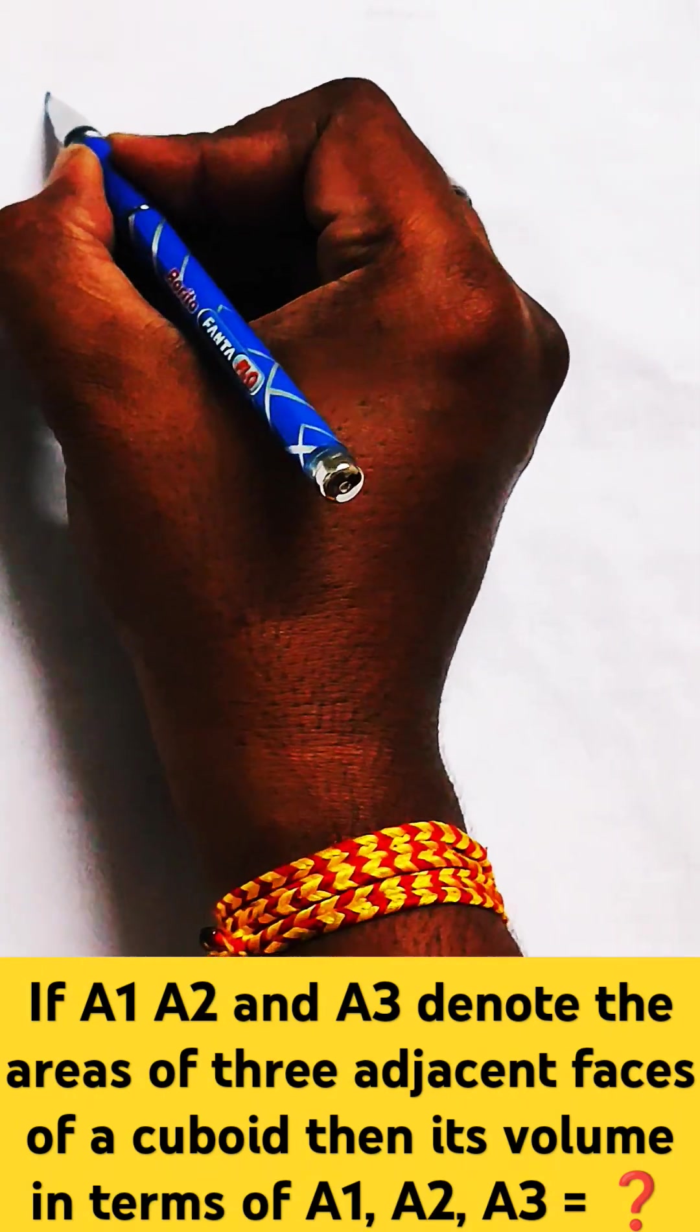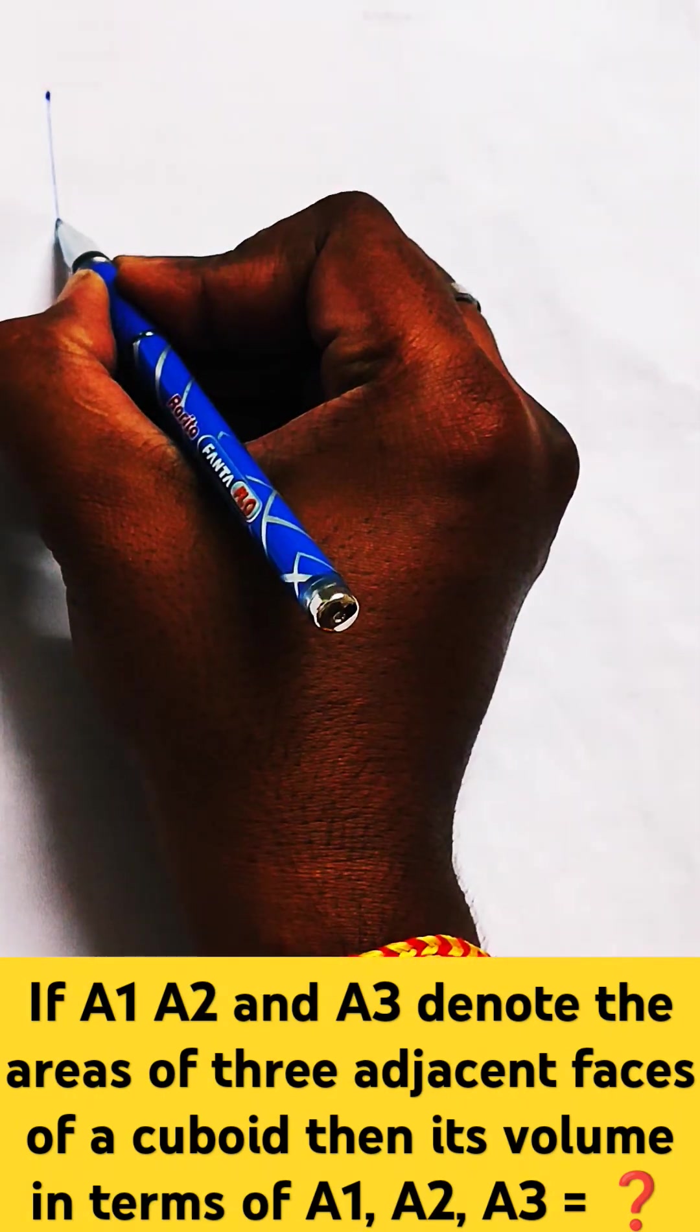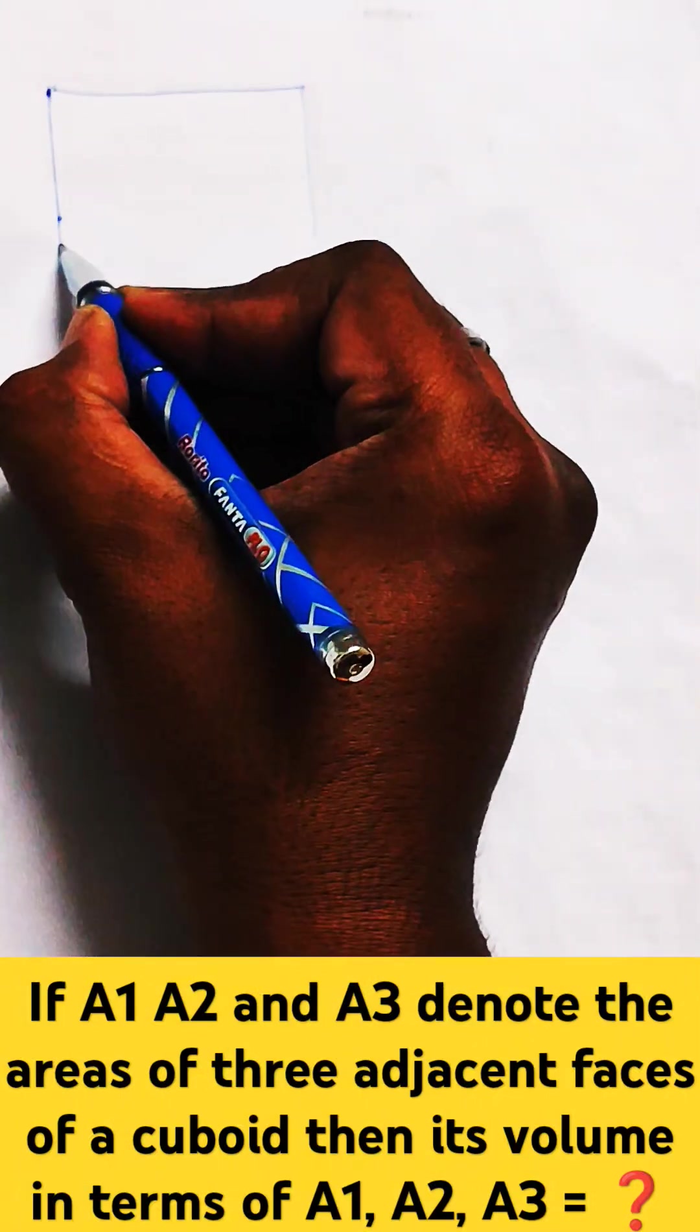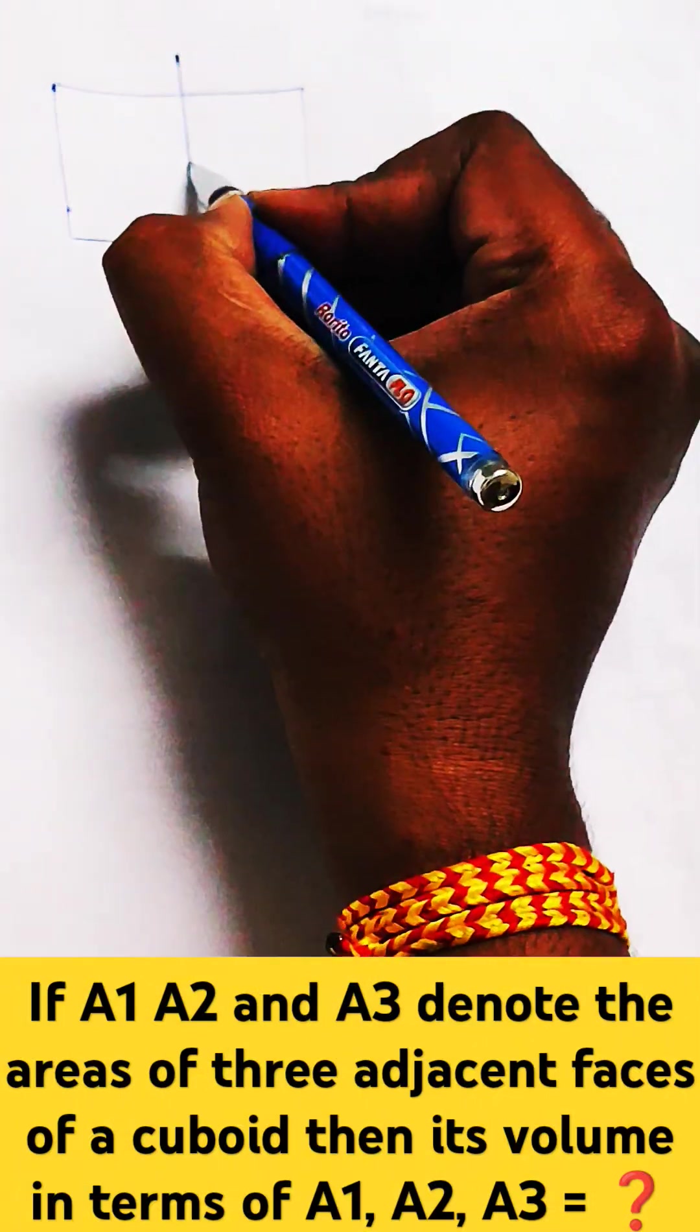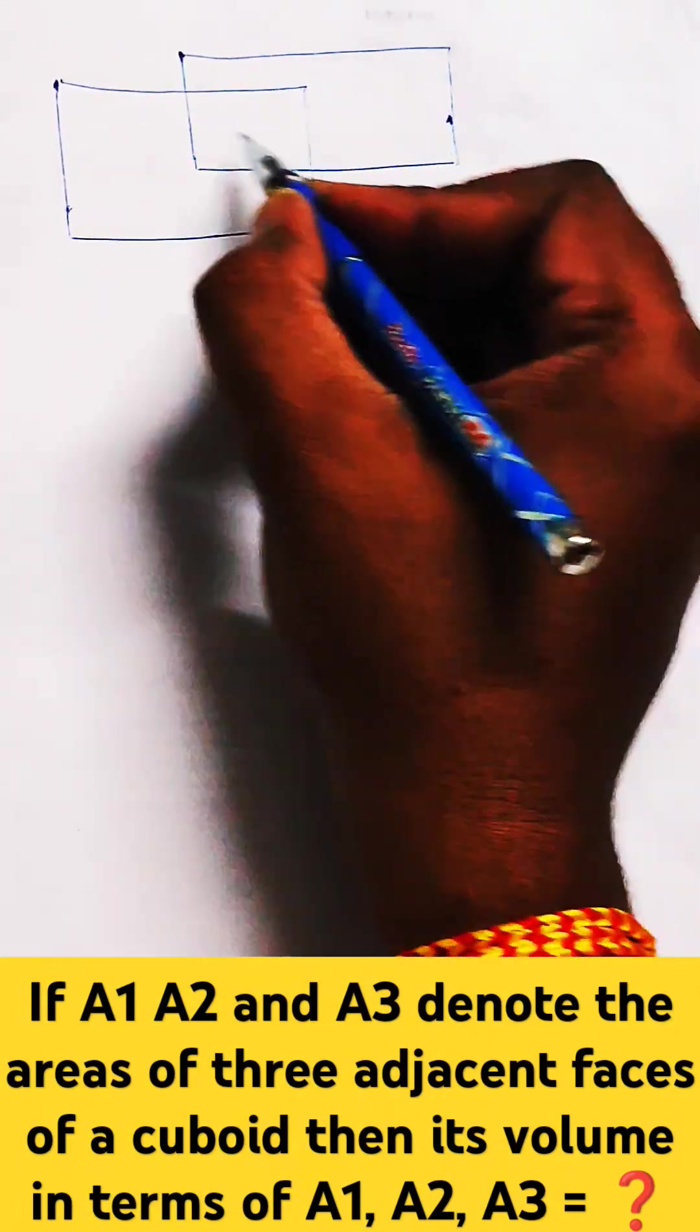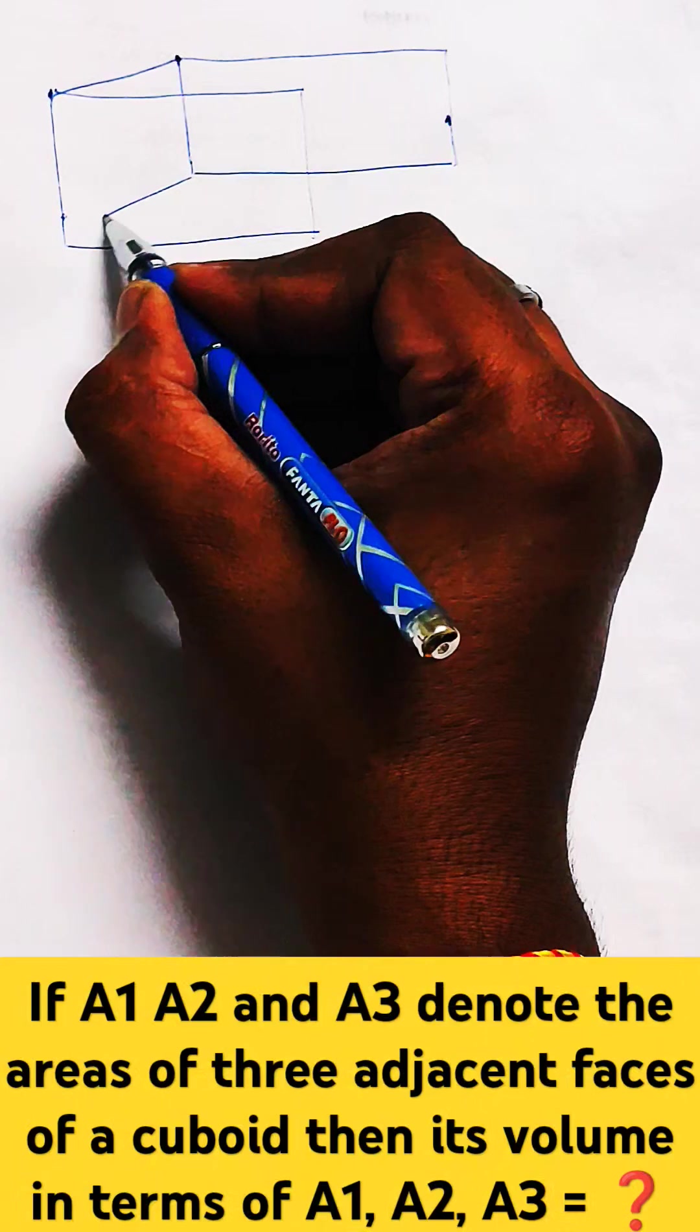It's given that a cuboid is given to you. Now, if the area of all its three faces is A1, A2 and A3.